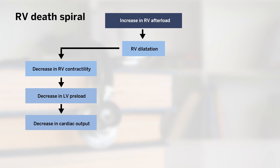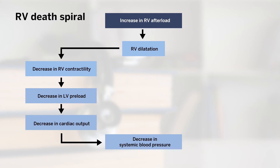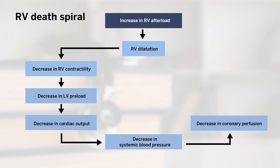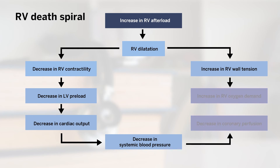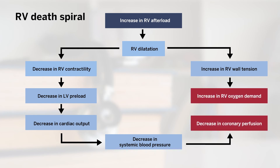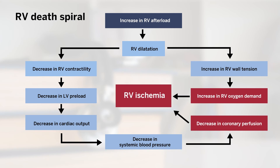With a decrease in cardiac output, the systemic blood pressure decreases, and therefore there is less coronary perfusion. Simultaneously, RV dilatation leads to an increase in right ventricular wall tension. With an increase in wall tension, there is an increase in right ventricular oxygen demand. The combination of decreased coronary perfusion and increased right ventricular oxygen demand leads to right ventricular ischemia.